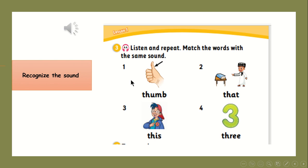Let's move to task number three: listen and repeat, match words with the same sound. Look here — what do we have? Thumb. And here we have 'that'. This. And here we have 'three'. Now you are going to match. Listen to these words again and match words that have the same sound.